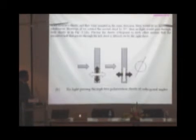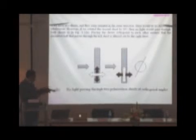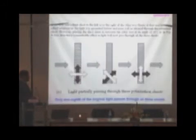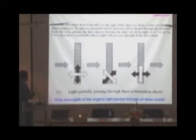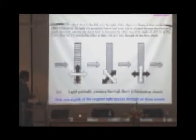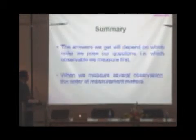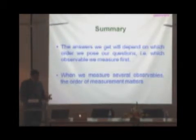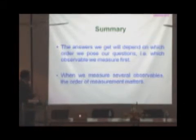We can try variants of this experiment. If you put a third sheet before or after the two orthogonal sheets, it has no effect — still nothing passes. However, if you place the third sheet in between the other two at an angle of 45 degrees, it has a remarkable effect: light will now pass through all three sheets. Only one-eighth of the original light passes through, but introducing the sheet in the middle changes how things work. The summary is: the answers we get depend on the order in which we pose our questions — that is, which observable we measure first. When we measure several observables, the order of measurement matters.